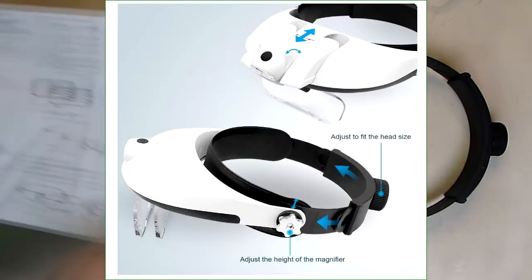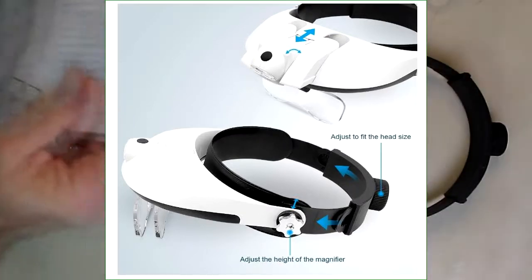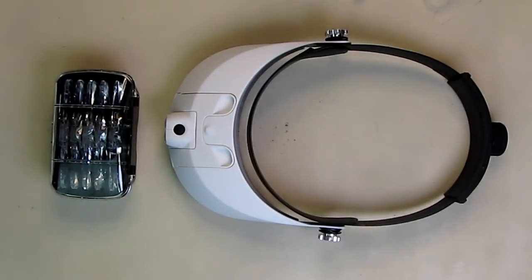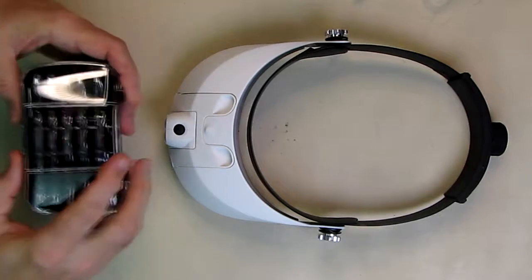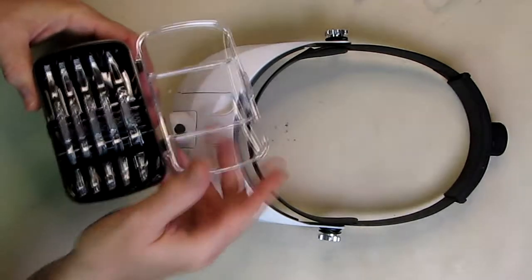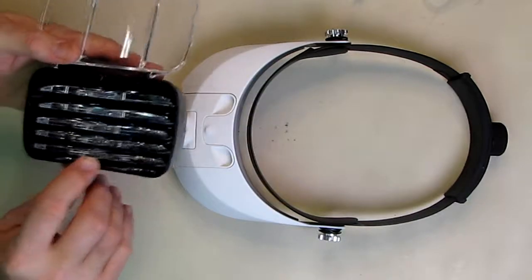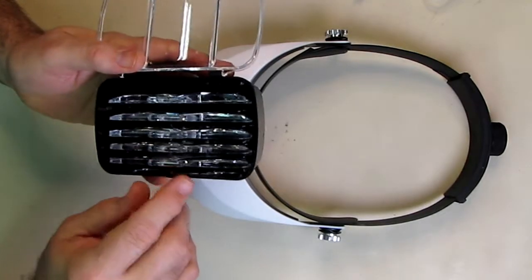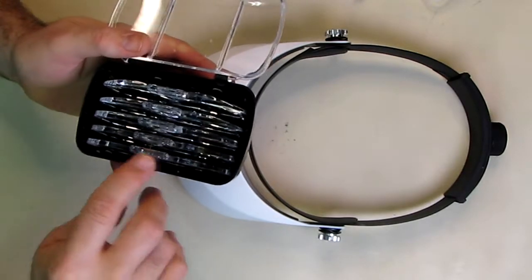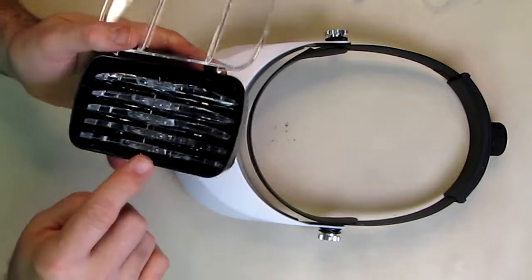Now it comes with a simple instruction sheet that shows you how to use the unit. So here's the lenses. It opens up and the powers are written on the top of the lens, and this section right here is what inserts into this unit itself.